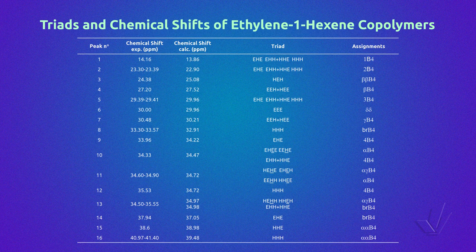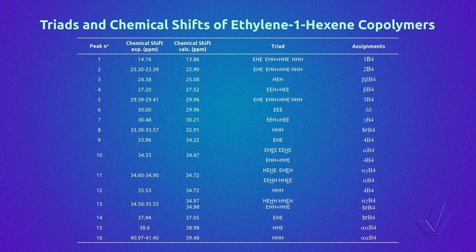In the third column, there are the calculated chemical shifts in ppm, obtained using the equation of Liedermann and Adams, as we have seen in part 7 of this course. In the fourth column, we have the triad or tetrad sequences for the ethylene-1-hexene copolymer corresponding to the chemical shift. And finally, the carbon atom of the triad related to each chemical shift.